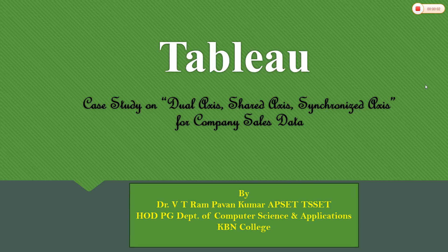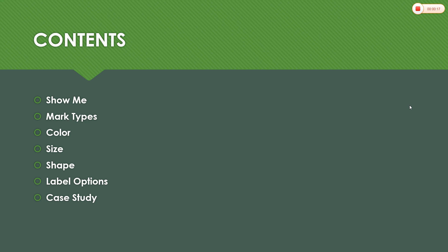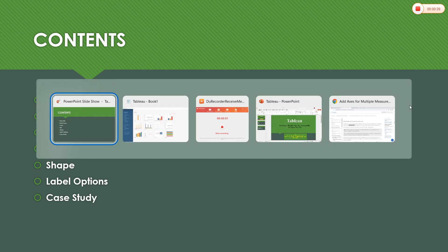Good afternoon, one and all. In this session, we are going to learn some of the basic features of Tableau, and by combining all the basic features, we are going to perform one case study on dual access, shared access, and synchronized access for a company sales data in Tableau. The contents include the Show Me option, the mark types option, the color, size, shape, and label options in Tableau. By combining all these options, we are going to perform one case study. So let me open Tableau first.